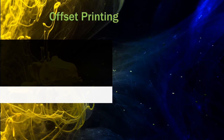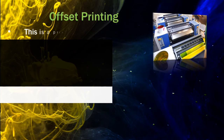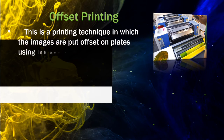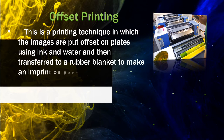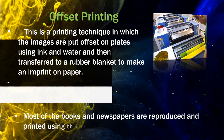Next was offset printing. This is a printing technique in which the images are put on plates using ink and water and then transferred to a rubber blanket to make an imprint on paper. Most books and newspapers are reproduced and printed using this technique.